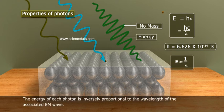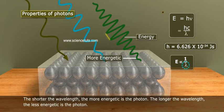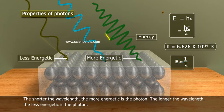The energy of each photon is inversely proportional to the wavelength of the associated EM wave. The shorter the wavelength, the more energetic is the photon; the longer the wavelength, the less energetic is the photon.